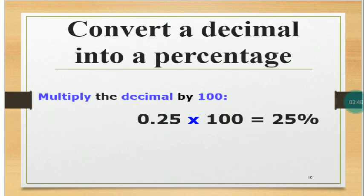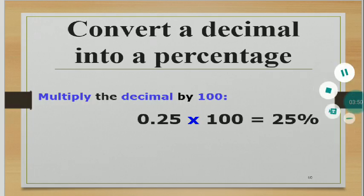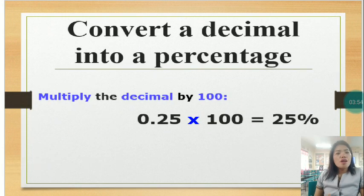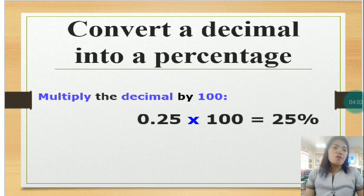Converting a decimal into a percentage, multiply the decimal by 100. So that's 0.25 or 25 hundredths times 100, that is equal to 25%.